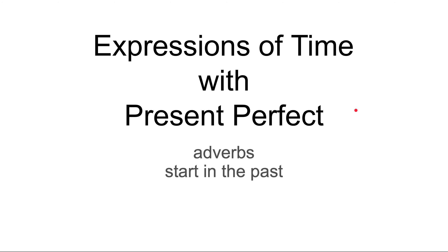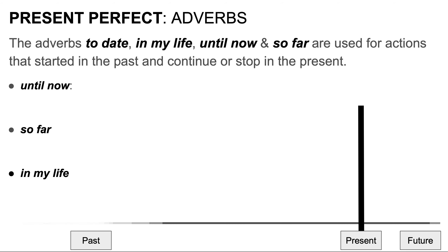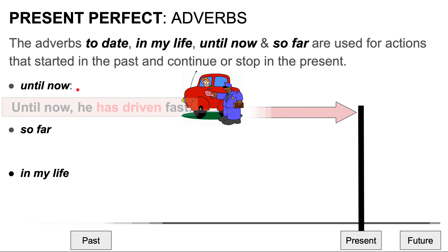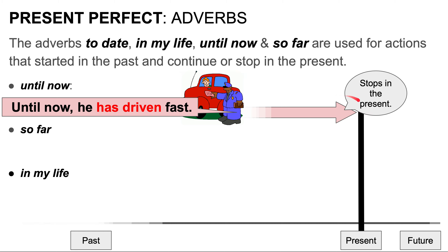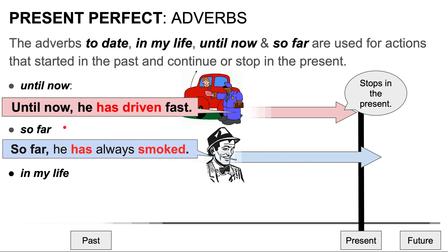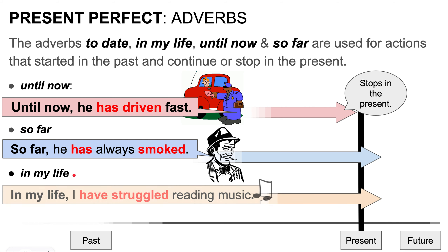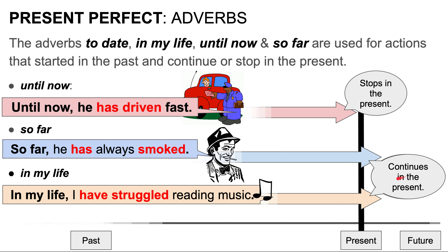Now we're going to look at adverbs used with the present perfect for actions that start in the past. The adverbs to date, in my life, until now, and so far are used for actions that started in the past and continue or stop in the present. For example, until now he has driven fast — this stops in the present. So far, he has always swum. In my life, I have struggled reading music. Please note that so far and in my life continue in the present, but until now stops in the present.